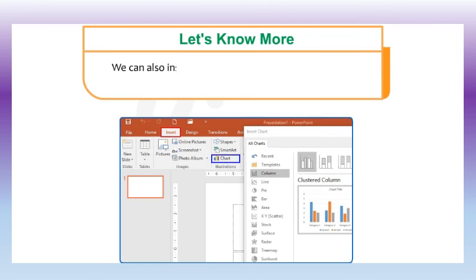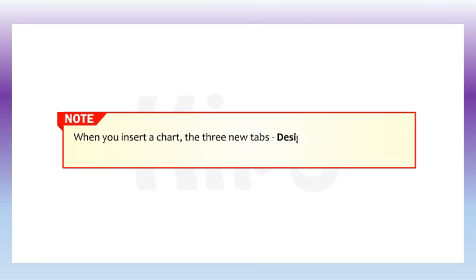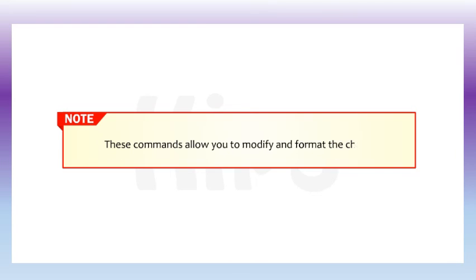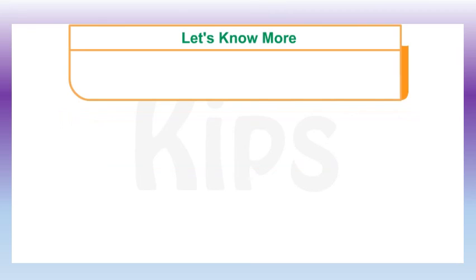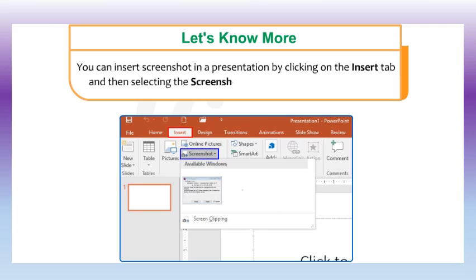You can also insert a chart in any slide by using the chart button present on the insert tab in the illustrations group. When you insert a chart, three new tabs appear on the ribbon: design, layout, and format, containing various chart tools and commands. These commands allow you to modify and format the chart. You can also insert a screenshot in a presentation by clicking on the insert tab and selecting the screenshot button from the images group.